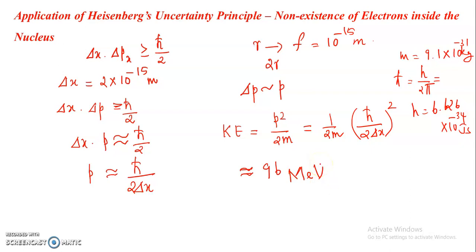So if an electron exists inside the nucleus, its kinetic energy according to the uncertainty principle would be of the order of 96 mega electron volts. But from experiments, we have observed that the kinetic energy of electrons ejected from the nucleus is only about 4 mega electron volts. An electron having such a large energy cannot exist inside the nucleus. This is the proof of non-existence of electrons inside the nucleus using the uncertainty principle.